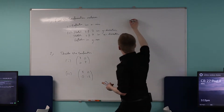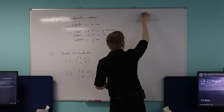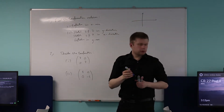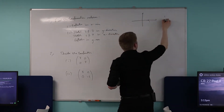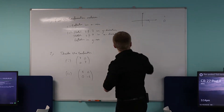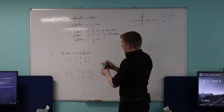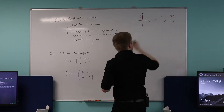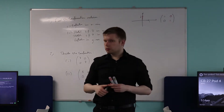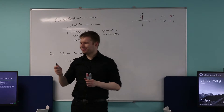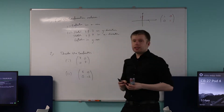First things first, we think about our basis vectors. Our basis vectors — who can remember what they are? So you've got i, which is (1, 0) — remember we write it as a column. And you've got j, which is (0, 1). And then we write this in a matrix. Who can remember what that matrix is called? It's the identity matrix. So (1, 0 / 0, 1) is the identity matrix.